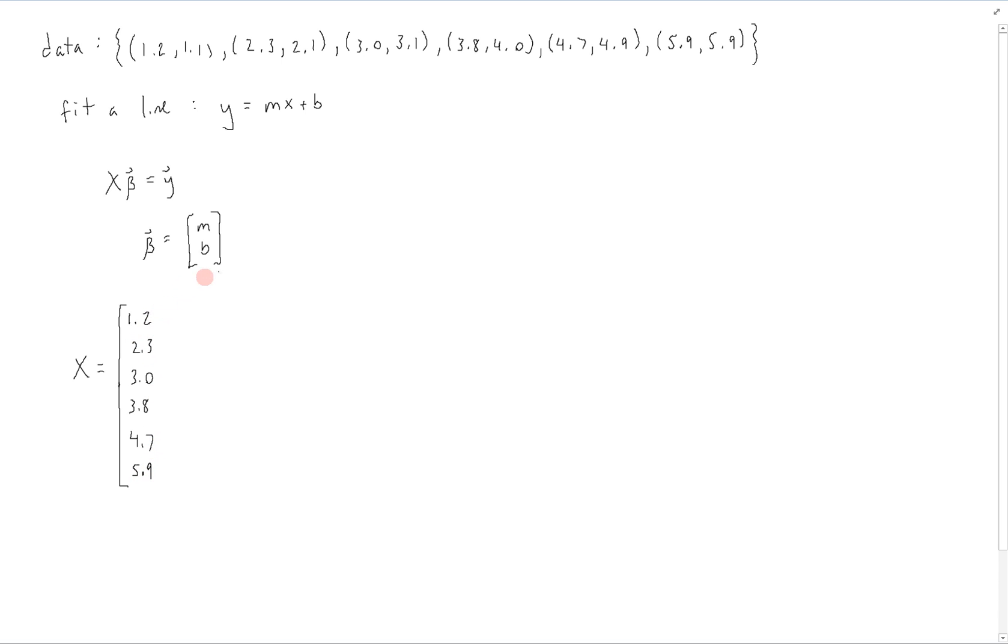And the next column is going to be the values that correspond to the second β parameter, which is b, and that's always going to be just 1. So this will be a column of 1s in our design matrix.